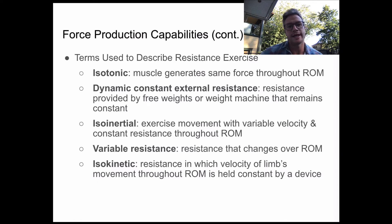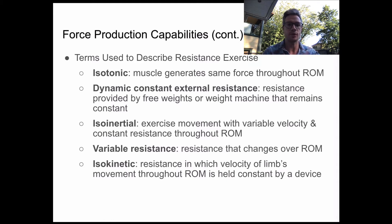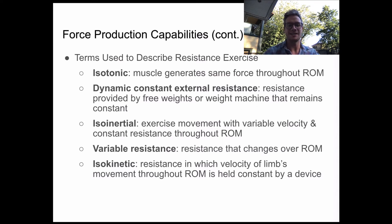The first type of resistance exercise we'll cover is called isotonic. In this sort of exercise, the amount of force that the muscles produce throughout a bicep curl, for example, is going to be the same. Now, the way this practically works based on biomechanics and machine design is this essentially doesn't happen — there aren't really any machines that allow for true isotonic movements. What we tend to see instead is dynamic constant external resistance.